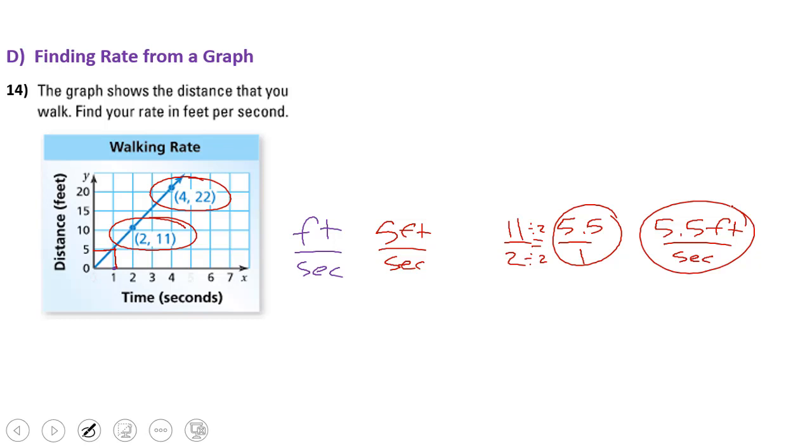It would be awesome if we could just use the graph and take a look at that one, but we're not absolutely perfectly sure. That would be a good estimation, obviously, if you were estimating. But since they give us those numbers, they give us those points on the graph, we want to make sure we use them. Of course, you can double check it. You can go to 22 over the 4 and divide that by 4, you still get 5.5 feet per second.